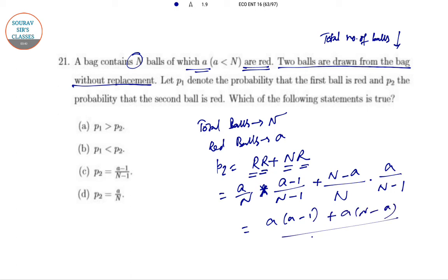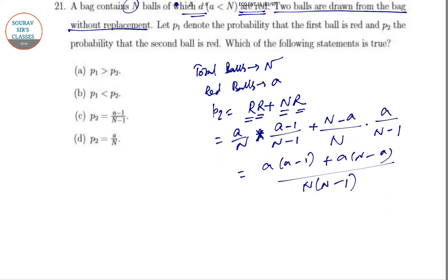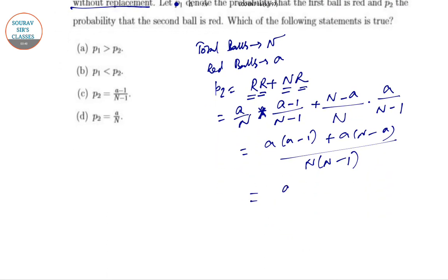After simplification, we get p₂ = a/N, which is option D. Now let's proceed to the next question—this will be the last question for this video.